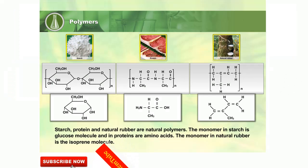Starch, protein, and natural rubber are natural polymers. The monomer in starch is the glucose molecule, and in proteins are amino acids. The monomer in natural rubber is the isoprene molecule.